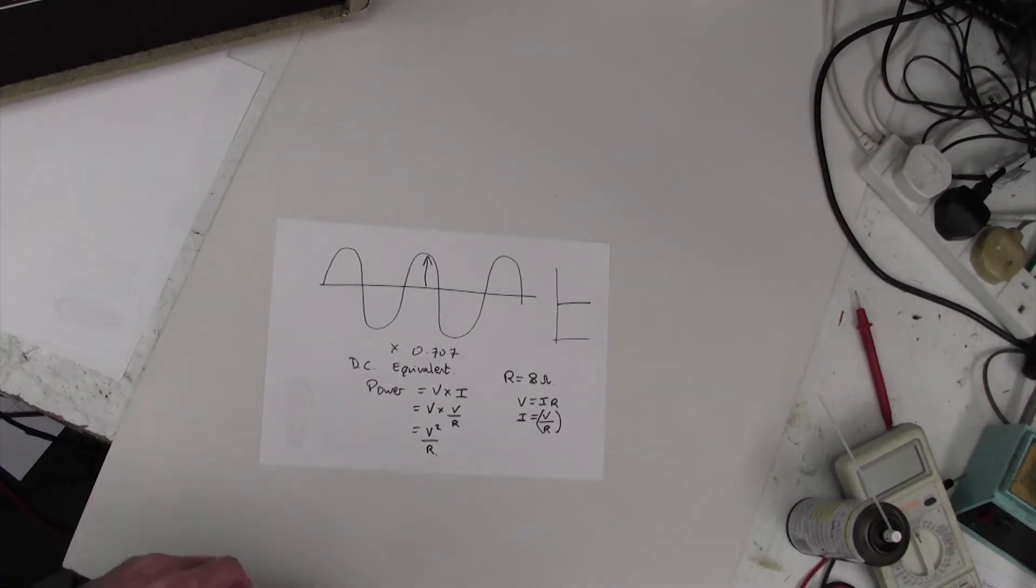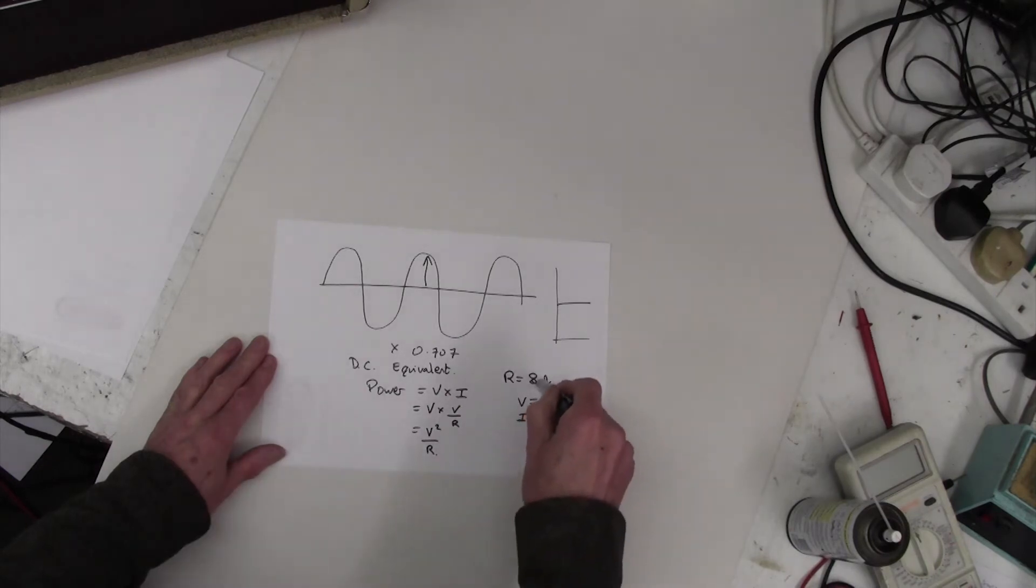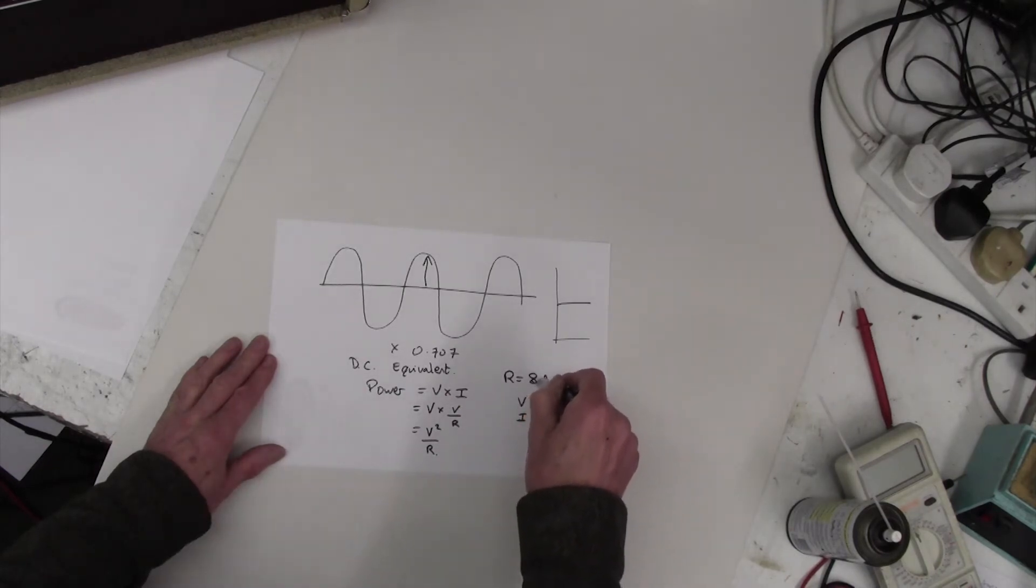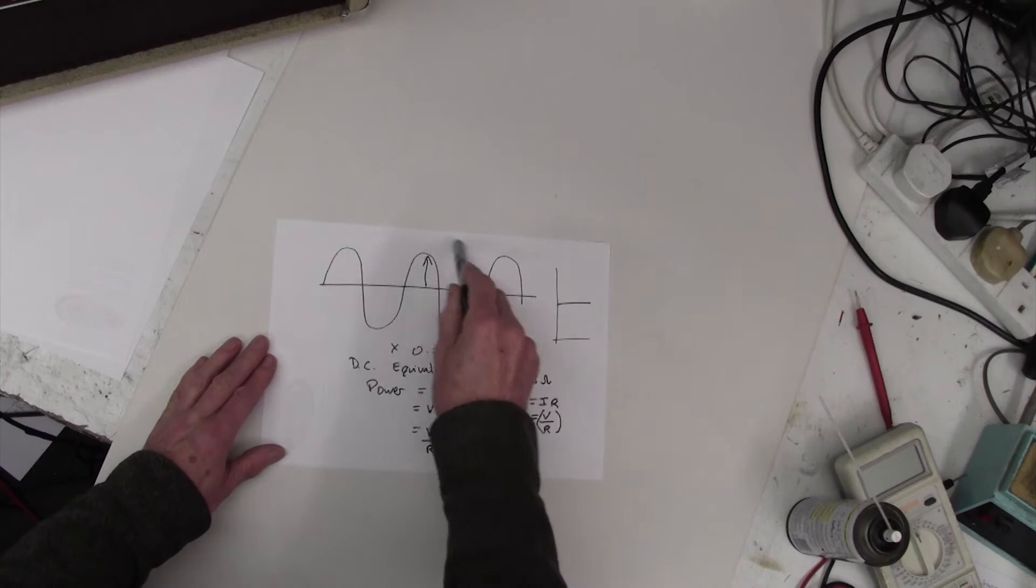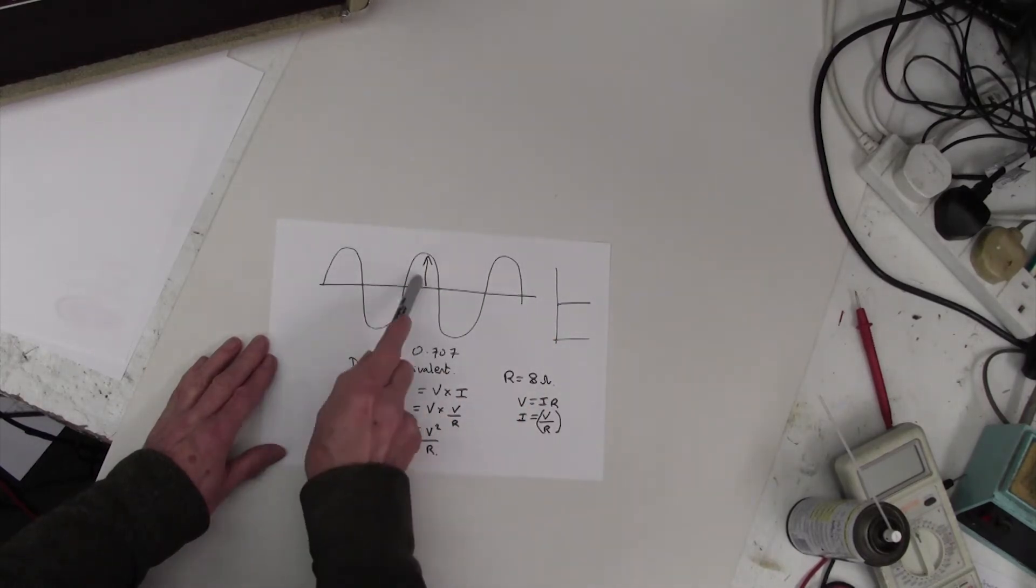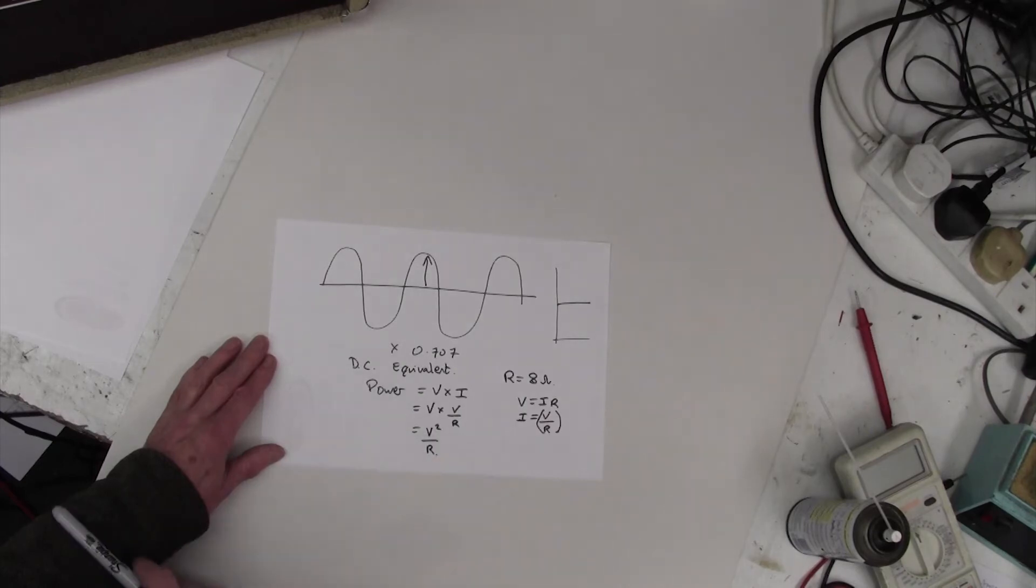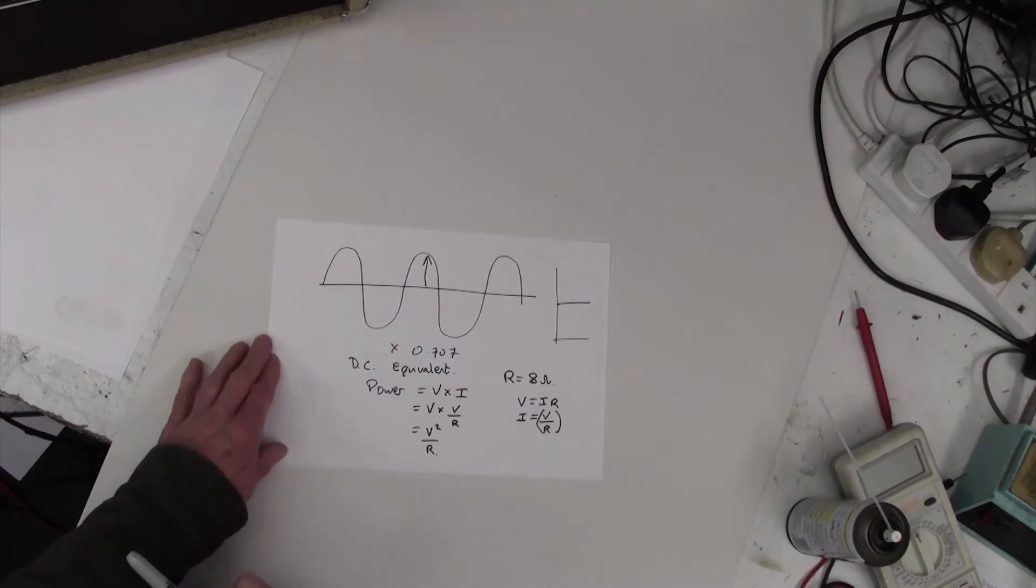If I can measure the output peak-to-peak sine wave on an oscilloscope whilst the amp is connected to an 8 ohm load, I can get out the DC equivalent of that voltage, which we already know is 0.707 times the peak. That gives me my V. I can square it, and I can divide it by our resistance, which as you know is 8 ohms. So that's the formula we're going to use. Let's now go and do a practical measurement, and I'll show you how that works.